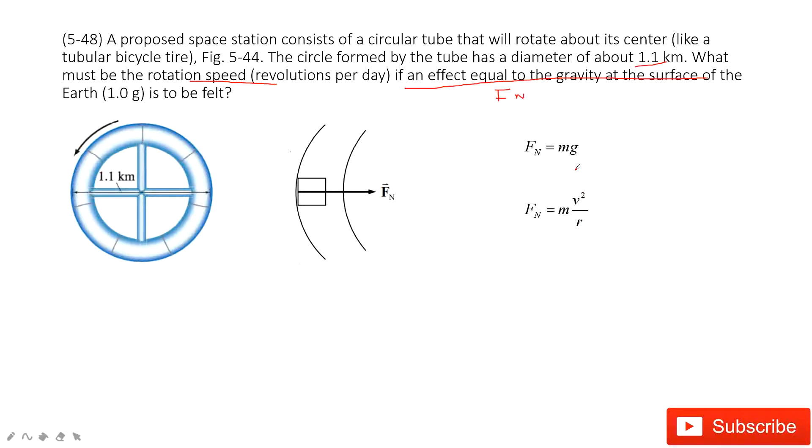And also, we can solve this equation. You can see mg equals mv squared divided by r. Then you can get v equals square root of g times r.